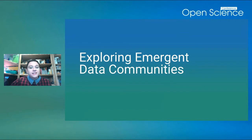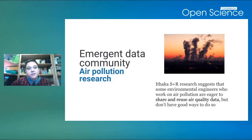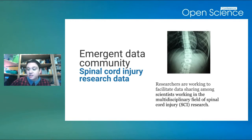The million dollar question is: how can you find data communities when they're just getting started? I call these emergent data communities — scholars who may be enthusiastic about data sharing but don't have fully established practices yet. A few examples: air pollution research, where some environmental engineers are very eager to share and reuse their air quality data but don't have ways to do so yet. Or spinal cord injury research, where there's a small but growing group of maybe 50 or 60 scholars really interested in facilitating data sharing more broadly.